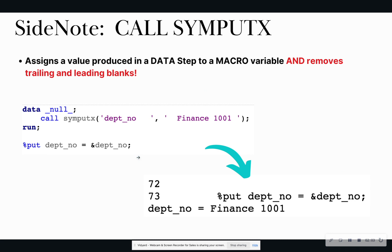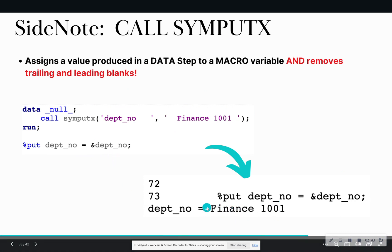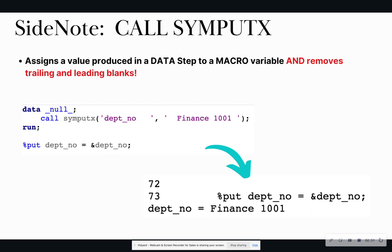Before we go into creating dummy variables, let's do a quick side note about the call-send-put-x routine. The main difference is that when you use call-send-put-x, it removes any trailing and leading blanks. So if I create macro variable department_no and assign it a value of 'finance 1001' — notice it has blanks or spaces in the middle — when I do my put statement and look at the log, I see that I have no trailing or leading blanks. That is the main difference between call-send-put and call-send-put-x.